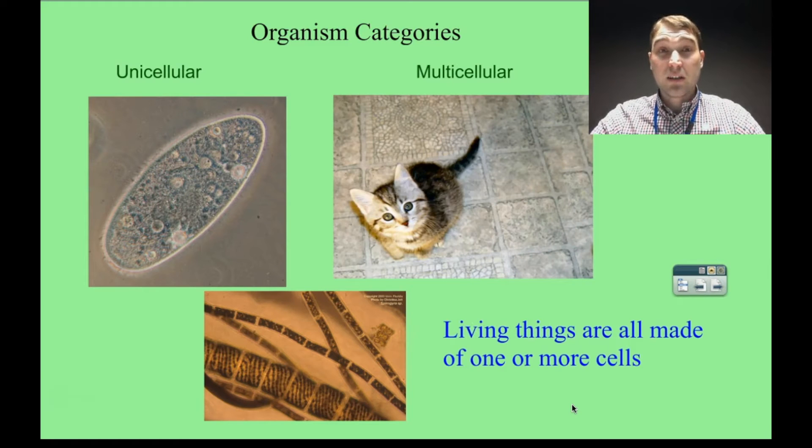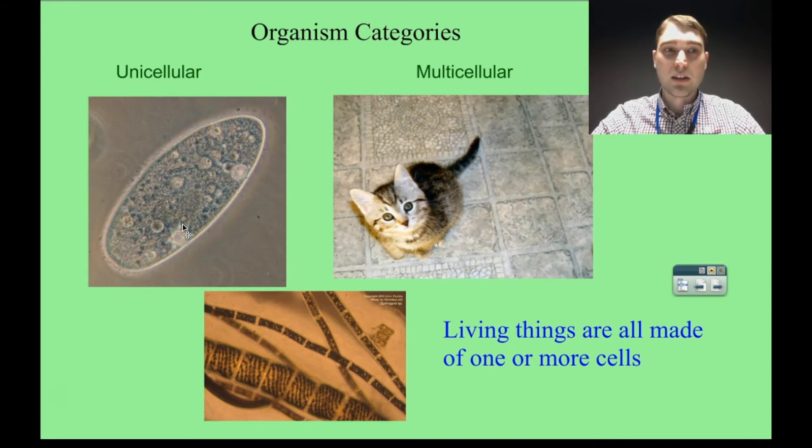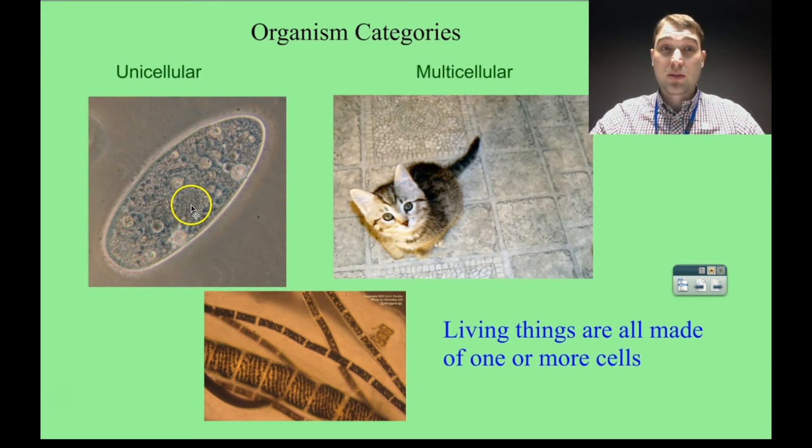Now in biology, we like to categorize things. We have two categories of organisms at a basic level: unicellular and multicellular. If something's unicellular, uni means one, it's made up of one cell. Down here we have a paramecium that's made up of one cell. This can do everything we talked about before. Over here we have multicellular. We've got a kitty, made up of lots and lots of cells.